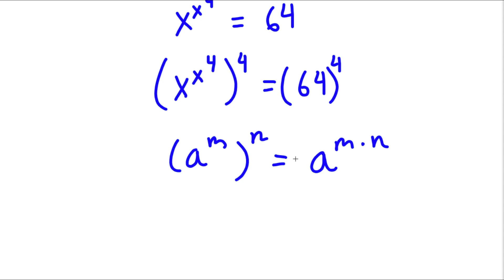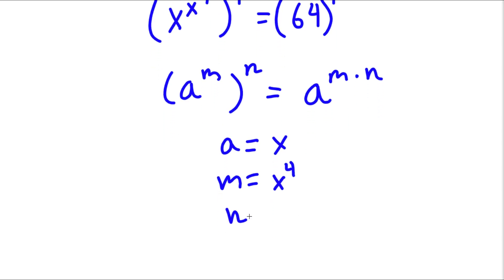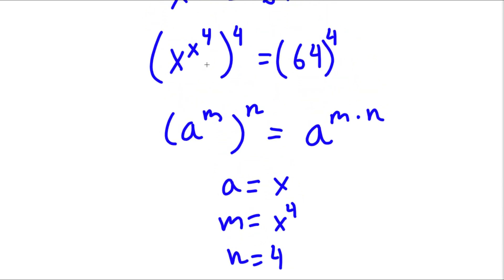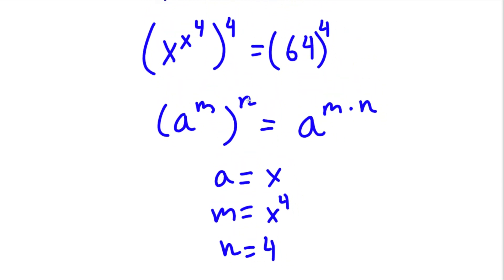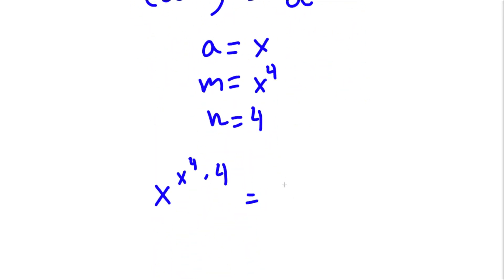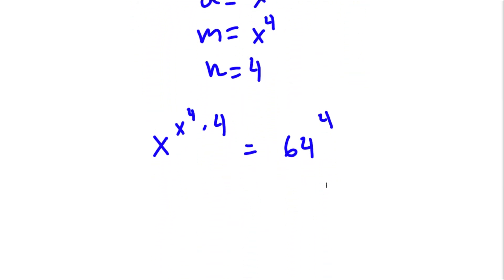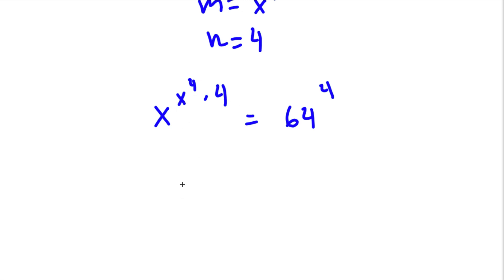So in this case, a is equal to x, m is equal to x to the power of 4, and n is equal to 4. So if I want to convert x to the power of x to the power of 4, to the power of 4, into the form a to the power of m times n, this would be x to the power of x to the power of 4 times 4, and this is equal to 64 to the power of 4. Now x to the power of 4 times 4 is simply 4x to the power of 4, so I have x to the power of 4x to the power of 4 is equal to 64 to the power of 4.